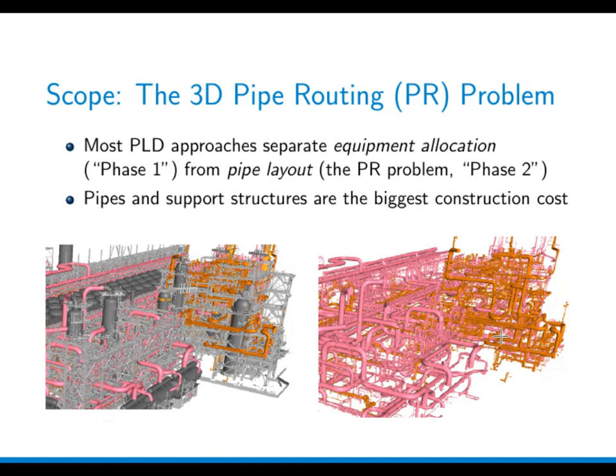The whole plant layout design problem in the literature is typically separated into two phases. The first phase is equipment allocation and the second phase is pipe layout. We typically accept the equipment layout from phase one and then do pipe routing — that is the phase two we are looking at.